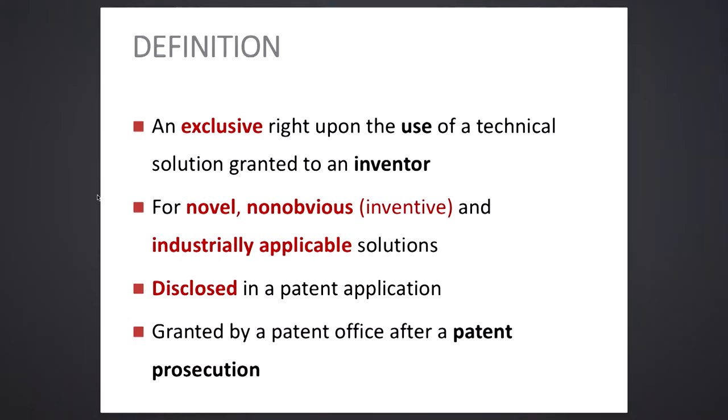A patent right is an exclusive right upon the use of a technical solution, granted to an inventor. Patents must meet three requirements — these differ depending on jurisdiction, but the main ones are: patents must be novel, non-obvious, and industrially applicable. The solutions are disclosed in the patent application, which is published after 18 months from the date of filing, and granted by a patent office. That's the main difference from copyright, because copyright is granted automatically, whereas for a patent you have to apply and pay.